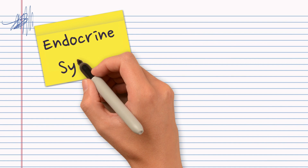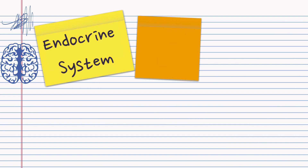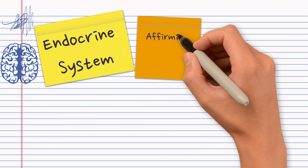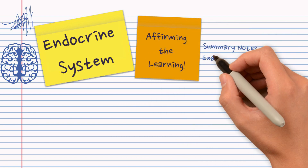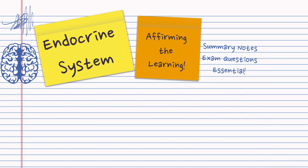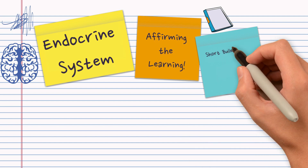You're watching this video maybe because you're revising or plan to revise the endocrine system. Perhaps you've read your book, maybe you've watched some videos, and now it's time to really do something to make sure that knowledge goes into your long-term memory. The only way to do that is to get active — write summary notes, do exam questions, and summarize your topics into bullet points.